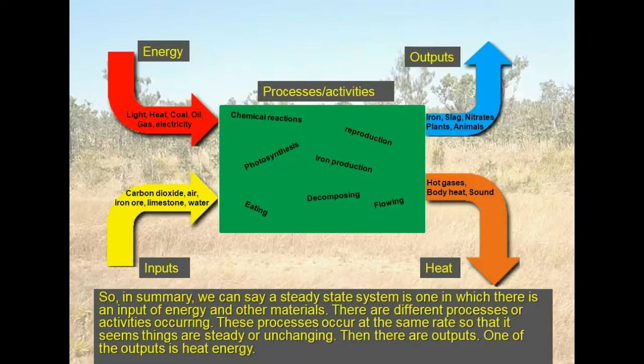In summary, a steady state system is one in which there is an input of energy and other materials. There are different processes or activities occurring, and these processes occur at the same rate so that things seem steady or unchanging. Then there are outputs — and one of those outputs is heat energy.